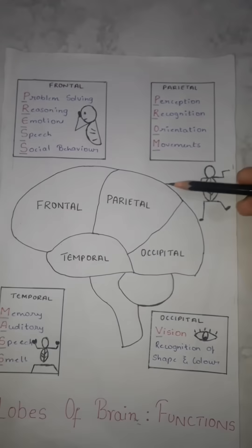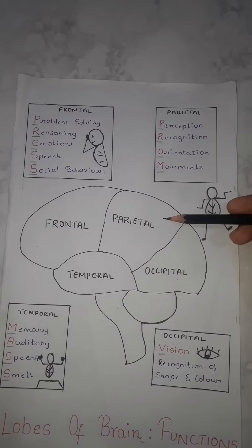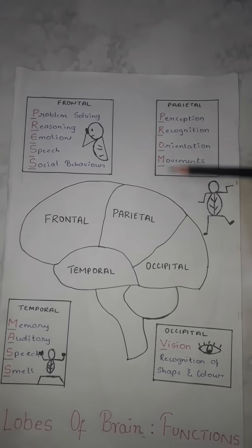So now let's come to the parietal lobe. In the parietal lobe, I want you to remember parents. So you want to ask your parents permission. Why? To go to prom.